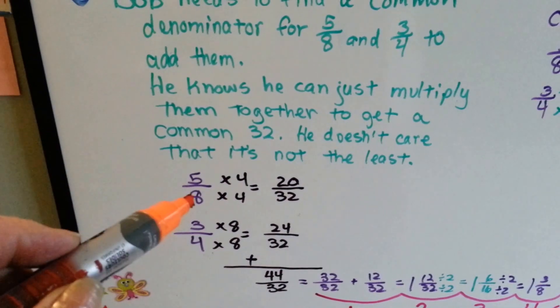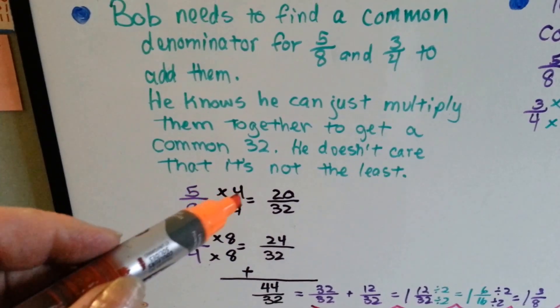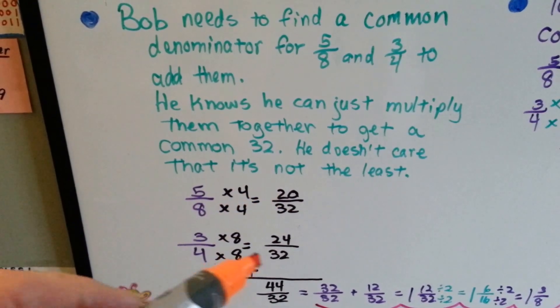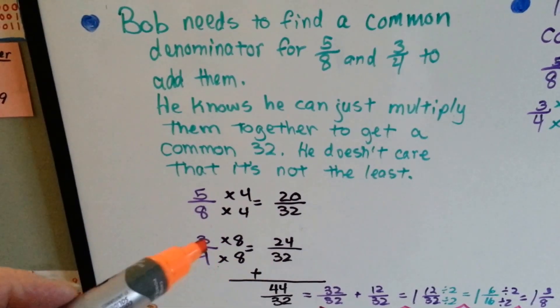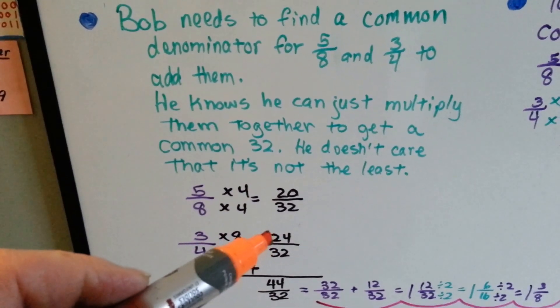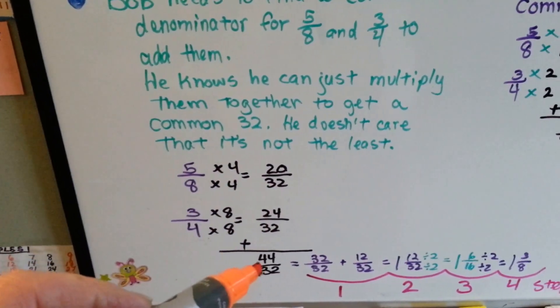So, 5/8 and 3/4. What does 8 need to be a 32? It needs to be multiplied by 4, so 5 does too. It gets jealous and becomes 20. 4 needs to be multiplied by 8 to become 32 and the 3 gets jealous. It wants to be multiplied by 8 and becomes 24. So now he adds them together and he's got 44/32.